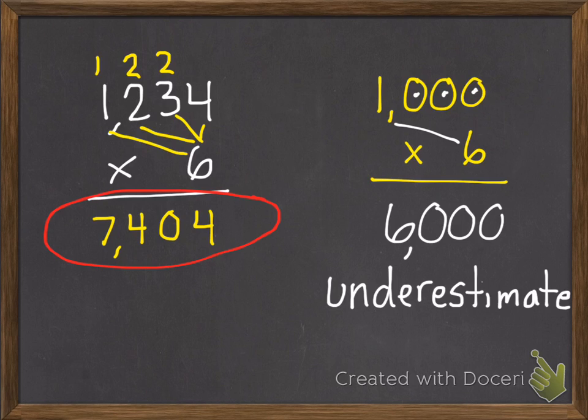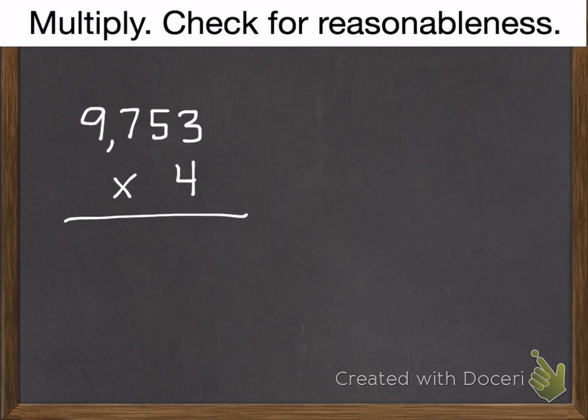And I'm going to do one more example in the thousands. So here we go. Three times four is twelve. Four times five is twenty. Plus the one is twenty-one. Four times seven is twenty-eight. Plus two is thirty. And then four times my nine is thirty-six. Plus three is thirty-nine.